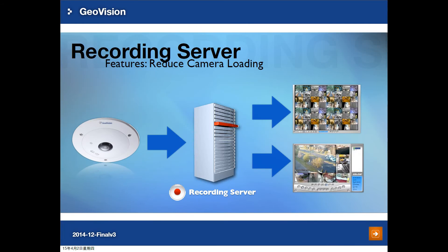One of the most important features of the Recording Server is to reduce camera loading. It can act as a video gateway where the camera only needs to send one stream to the Recording Server, and the Recording Server can then transmit up to 300 channels to different clients such as Control Center and DM MultiView.